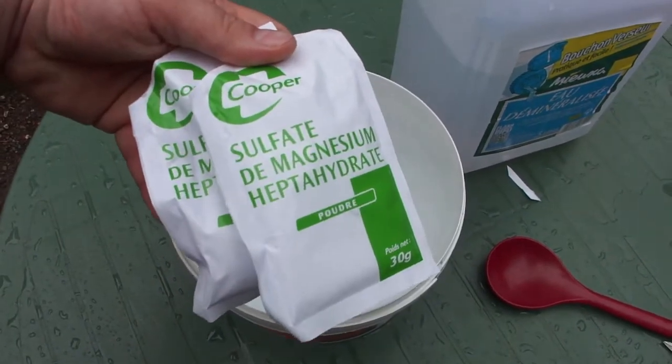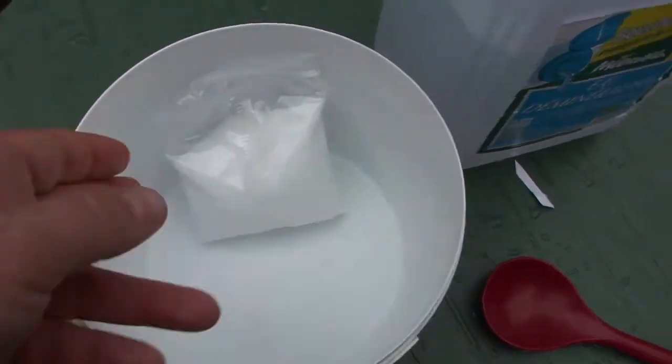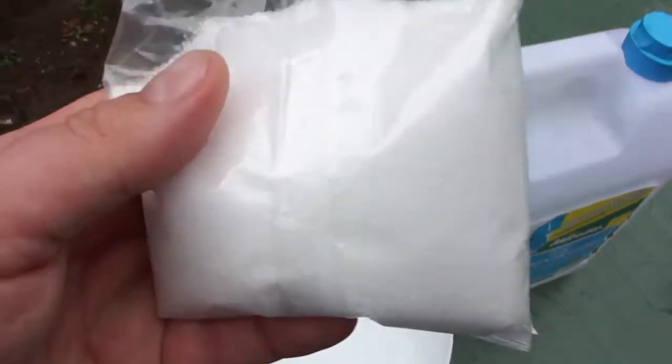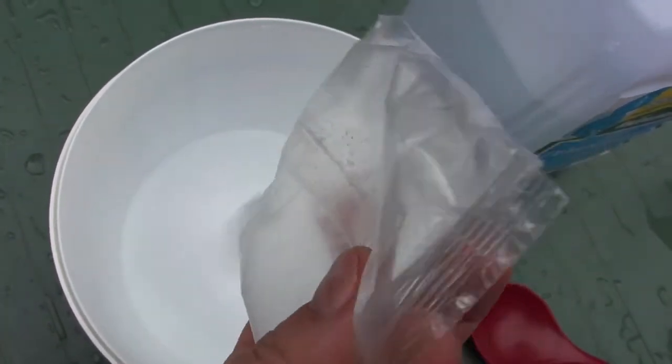I will mix now the 60 grams of sulfate magnesium heptahydrate with this 250 grams of powder, and you'll see.